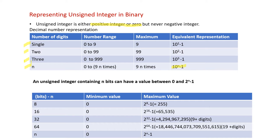For binary numbers, an unsigned integer containing n bits can have a value between 0 and 2^n - 1. For an 8-bit representation the minimum is 0 and the maximum is 2^8 - 1 = 255. For 16-bit, the minimum is 0 and the maximum is 2^16 - 1 = 65,535. This extends to 32 and 64 bits as well, with maximum values given in the table.